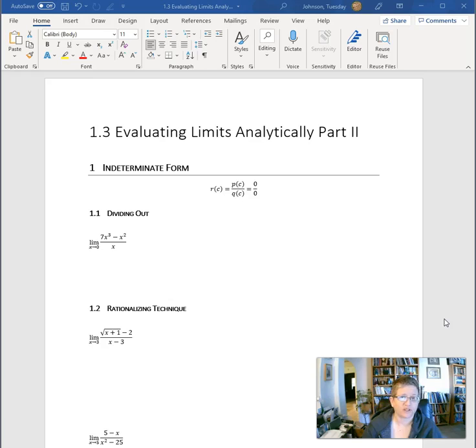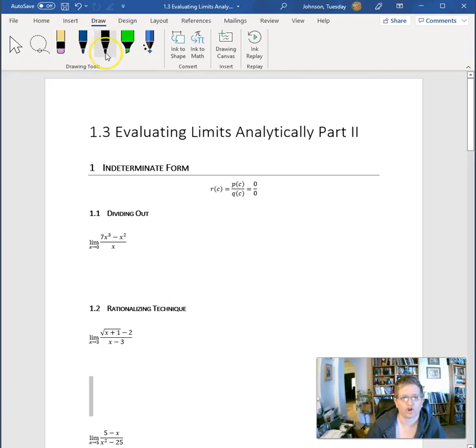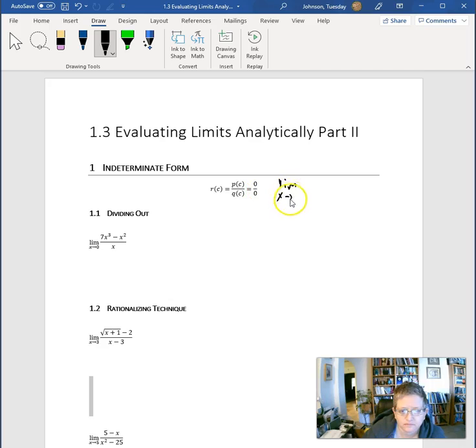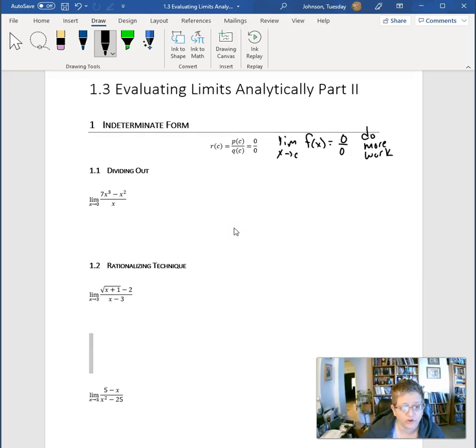We're going to talk more about this indeterminate form from section 1.3. What happens when we get 0 over 0? So, 0 over 0 is an indeterminate form. Anytime you get this in a limit, anytime a limit equals 0 over 0, you do more work. End of story.